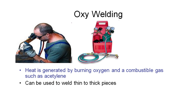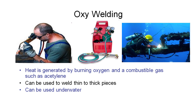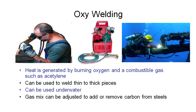Oxy welding can be used to weld thin to thick pieces because we can direct the heat where we want it, putting more heat into the thicker piece and preventing the thinner piece from melting away. It can also be done underwater — on offshore oil rigs, for example — by a highly specialized and well-paid technician. We can also adjust the balance of oxygen and acetylene in the mix to either add or remove carbon from the steels we're welding, helping ensure we get the desired final material properties.